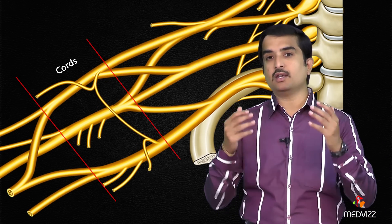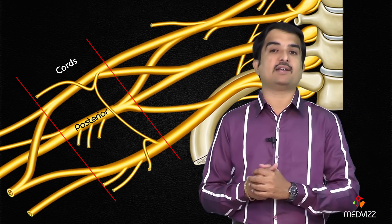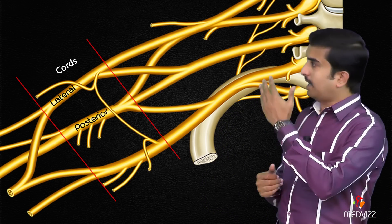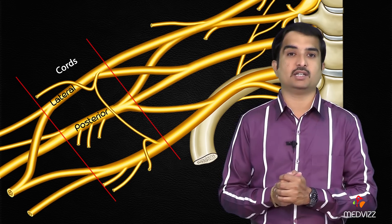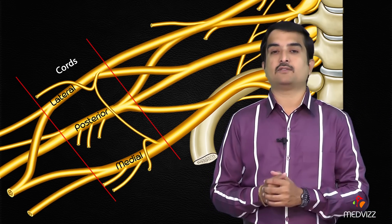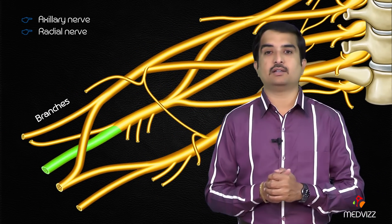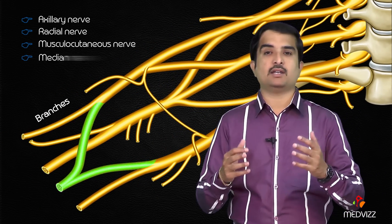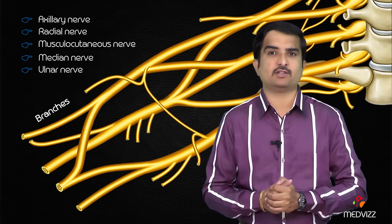We have three cords named according to their anatomical relationship with the second part of the axillary artery. The posterior cord gives off the axillary and radial nerves; the lateral cord gives off the musculocutaneous nerve and part of the median nerve; and the medial cord gives off the ulnar nerve and part of the median nerve. The five terminal branches are: axillary, radial, musculocutaneous, median, and ulnar nerves.